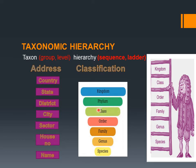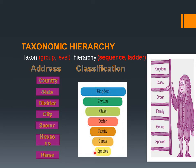Related classes are categorized into order, and order is related to family, family is related to genus, and then species. Just as a city is further categorized into street numbers and sectors, then house number and name of individual. So kingdom is the largest taxon and species is the smallest taxon.